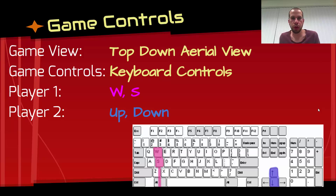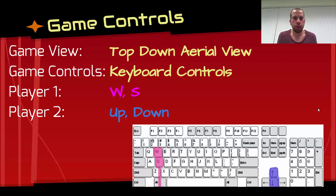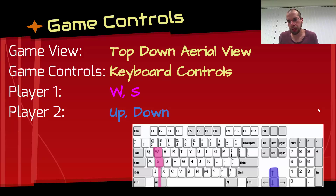The game controls is the setup for how your game is going to work - something you really need to think about when developing a game. The game view is going to be a top-down aerial view. The controls use the keyboard: player one has W and S, and player two has up and down. The positioning is spread out so players aren't bumping into each other, and they're clearly labeled so each player knows where they are.